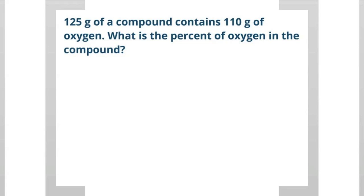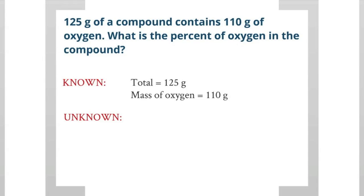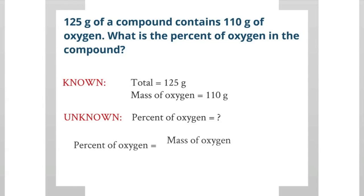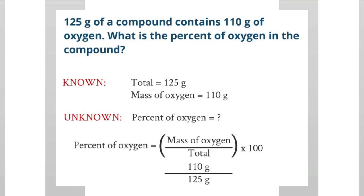What is the percent of oxygen in the compound? Let's look at our knowns and unknowns. Our total mass of the compound is 125 grams, and we know the mass of oxygen is 110 grams. Our unknown is the percent of oxygen. To find it, we take the mass of oxygen, divide it by the total mass, and multiply by 100. So: 110 grams divided by 125 grams, times 100, gives us 88%. This compound is 88% oxygen.